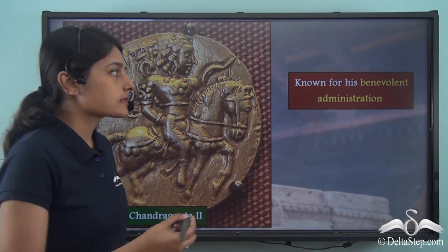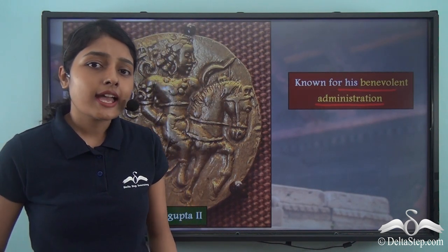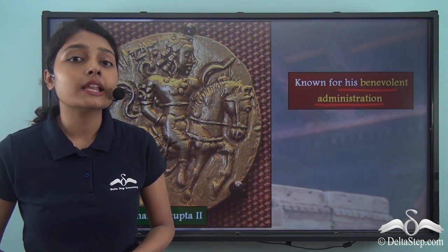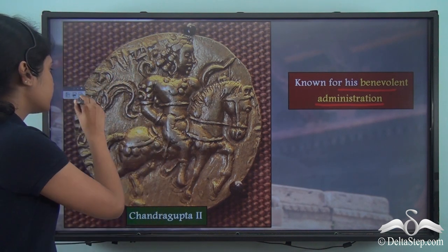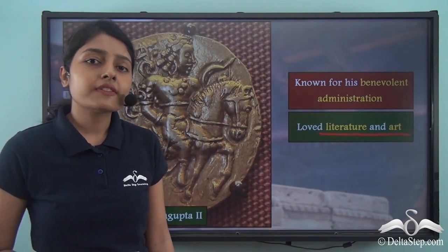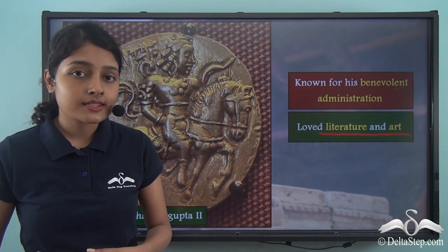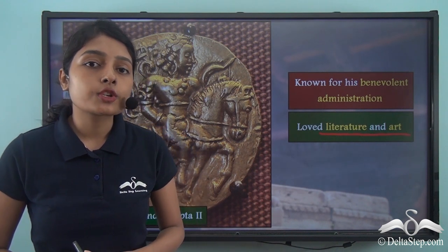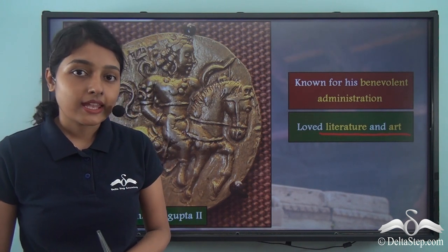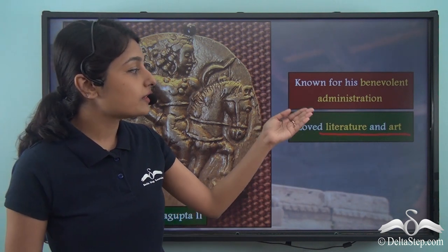Chandragupta II was well known for his benevolent administration. He was a very good ruler as well as a very benevolent administrator — not very harsh or cruel to his subjects. He also loved art and literature. In our previous lesson on Samudra Gupta, we learnt how he was also a patron of arts, and in fact Samudra Gupta's court poet Harishena called him Kaviraj, or the king of poetry. And here we get to know that his son Vikramaditya was also a lover of literature and art.